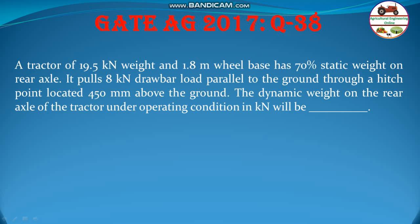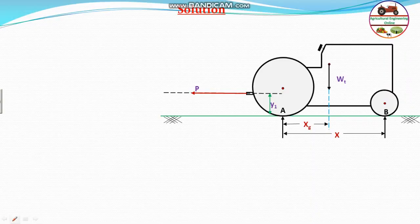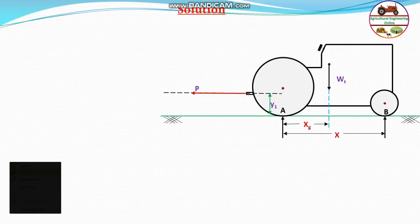The dynamic weight on the rear axle of the tractor under operating condition in kilo Newton will be dash. This is a very simple problem where you need to find out the weight transfer and calculate the dynamic weight.